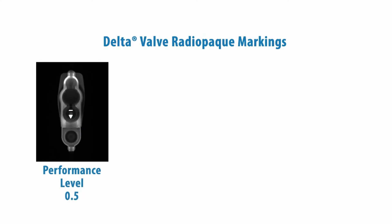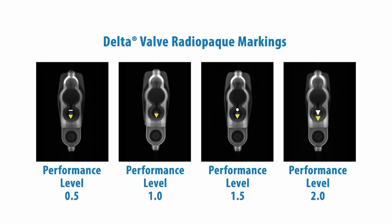Additionally, the Delta Valve has radiopaque markings. The arrow indicates direction of flow, and the marking behind the arrow indicates the valve performance level.